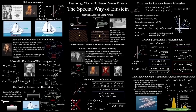Hello, this is Jason Kendall, and welcome to the next of my Introductory Cosmology Lectures. We're continuing in Dr. Barbara Ryden's cosmology book, Introduction to Cosmology, and I'm on Chapter 3, Section 2, Newton vs. Einstein. This is the special way of Einstein, and we're going to be describing the elements of special relativity. Thank you to my Patreon supporters and YouTube members — with no further ado, let's see how special Einstein's way really is.